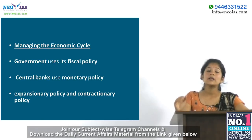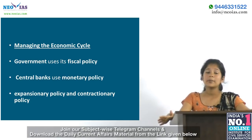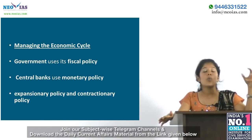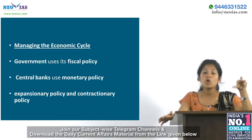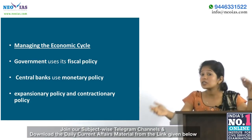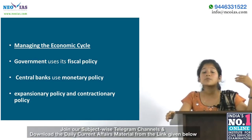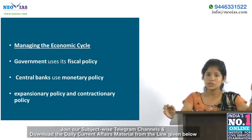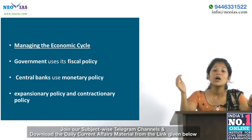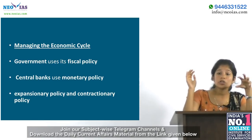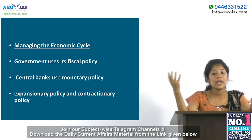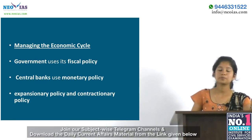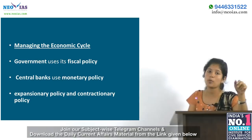The government and RBI both have a role in managing the economic cycle. The government uses its fiscal policy while the central bank uses its monetary policy to help manage and control the economic cycle. An expansionary policy is used to end or recover from a recession, while a contractionary policy helps prevent the economy from peaking or running away to inflation.